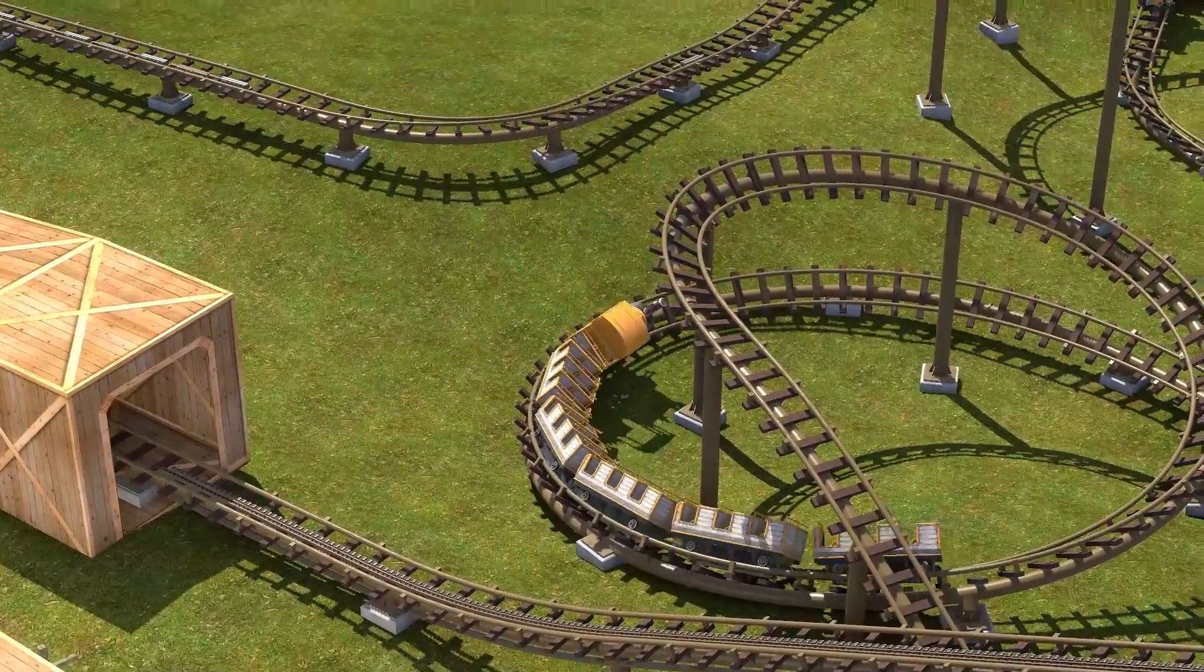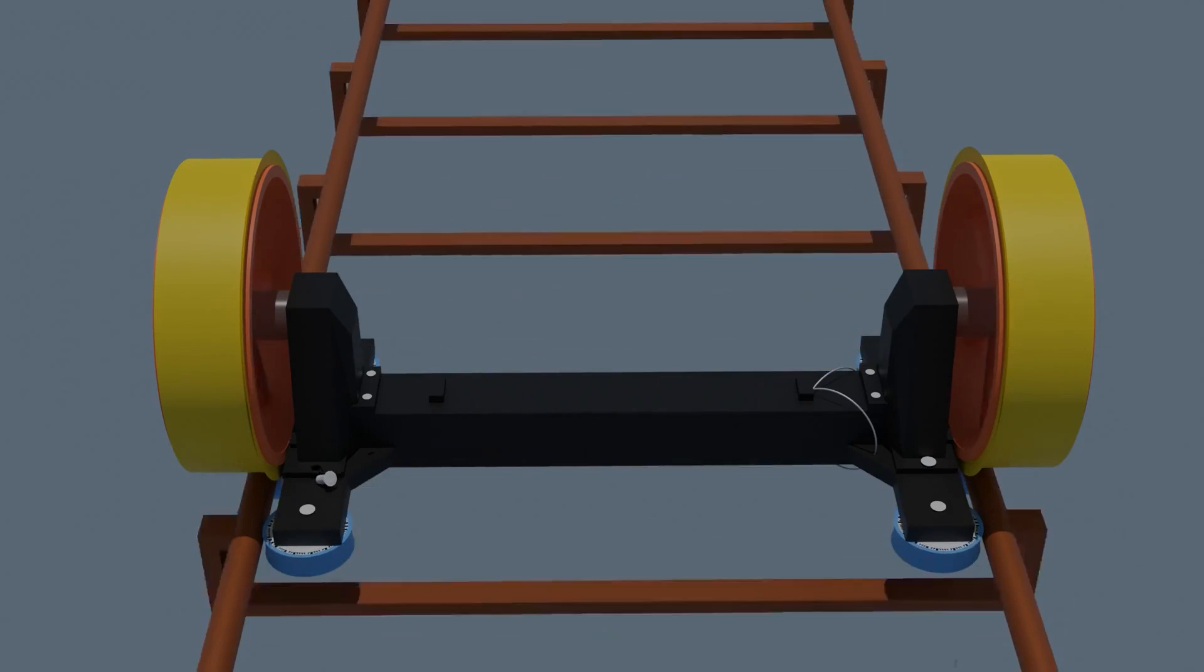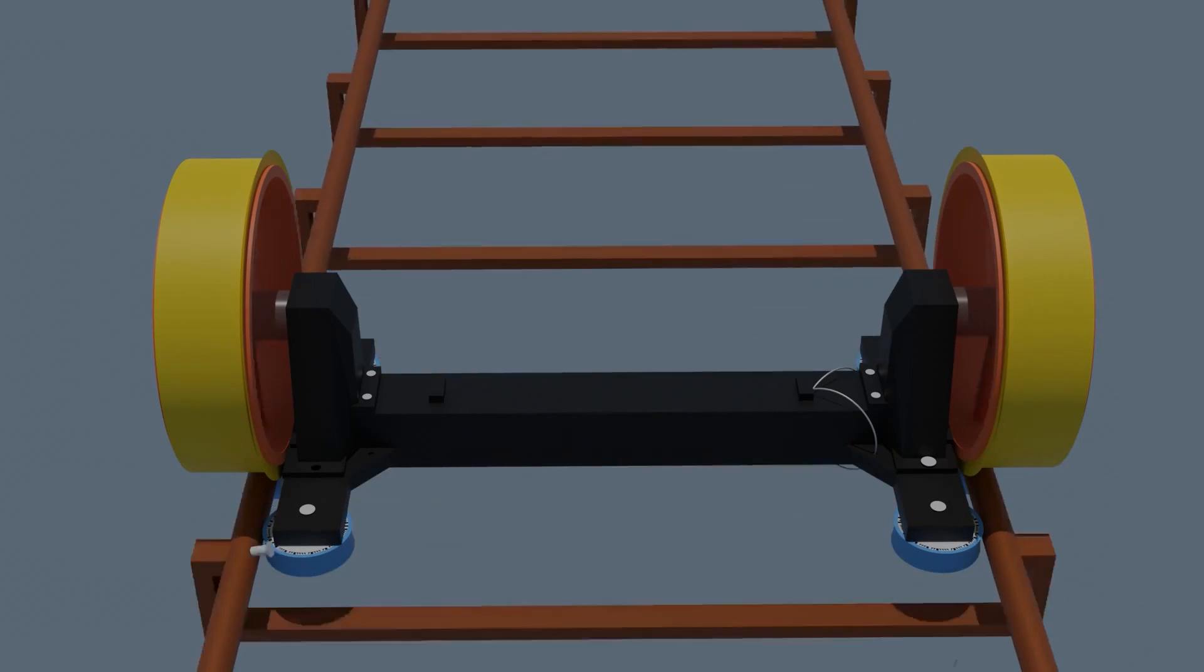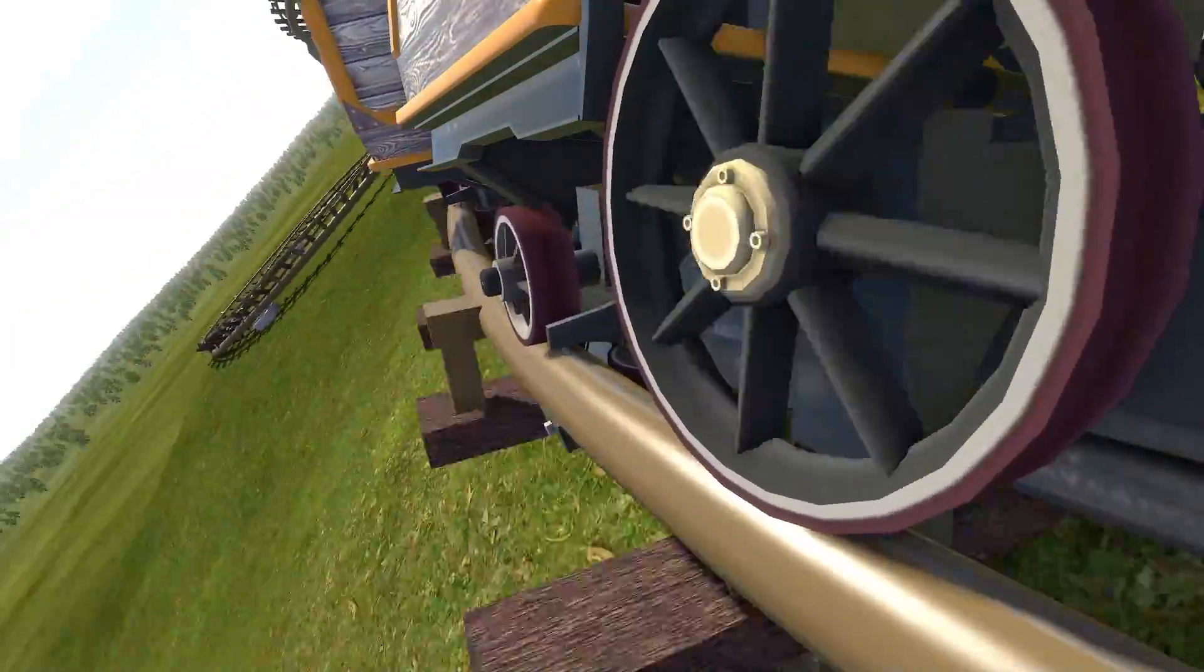After a few cycles, one of the two retaining bolts unthreaded itself due to vibration from the train traversing the layout. This left just one bolt holding the guide and upstop wheel to the floating axle on the front of the decorative locomotive car.